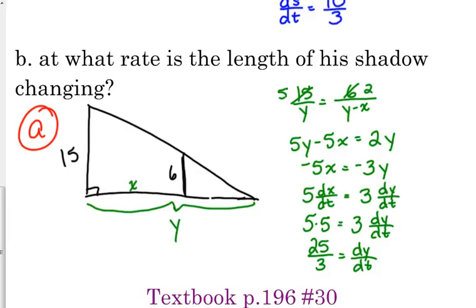...was the rate at which he was walking away, so 5 times 5 here on the left side, 3 times dy/dt. So 25 over 3 is the rate at which the tip of the shadow is moving.